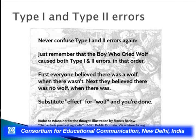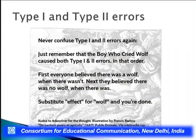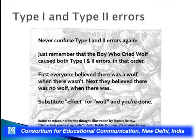Coming on to Type 1 and Type 2 errors. Never confuse the two — remember the boy who cried wolf caused both errors in order. First, everyone believed there was a wolf when there wasn't — that is a Type 1 error. Next, they believed there was no wolf but there was — that is a Type 2 error. Type 1 error: believing something exists when it does not. Type 2 error: believing something does not exist when it actually does. We will cover this in detail in the coming part.